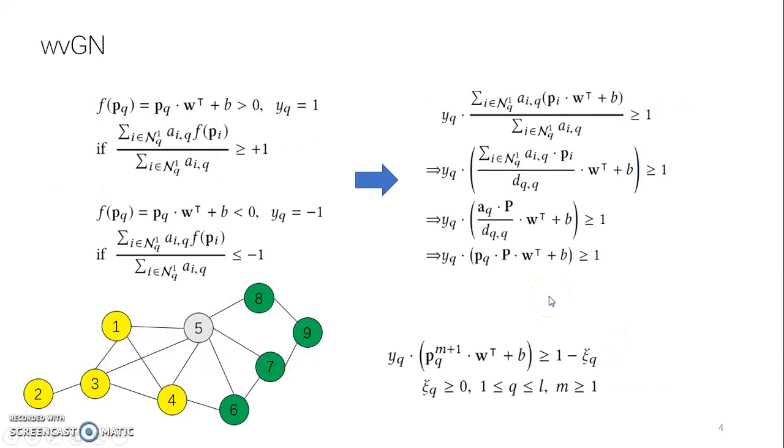We use the weighted vote strategy to determine the label of vertex 5. For each label of vertex 5, we multiply its class indicator score by the edge weight and compute the average class indicator score. If the average class indicator score is greater than 1, we give vertex 5 the green class label.